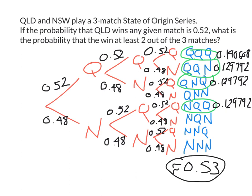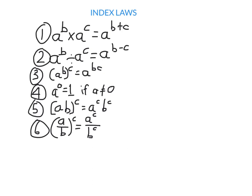Let's move on to index laws. The first index law says when you multiply the same base, you add the powers: a^b × a^c = a^(b+c). For example, x³ × x⁵ = x⁸. If there are coefficients as well, handle them separately: 2x⁴ × 3x = (2×3) × x^(4+1) = 6x⁵. The second index law says when dividing the same base, you subtract the powers: for example, x²⁰ ÷ x⁵ = x¹⁵.